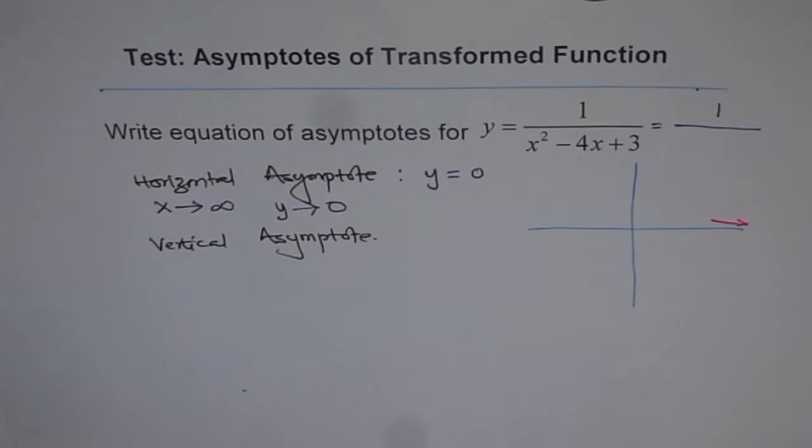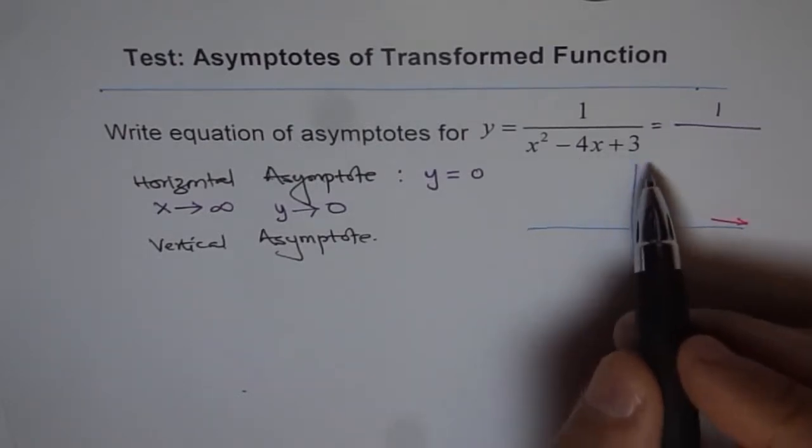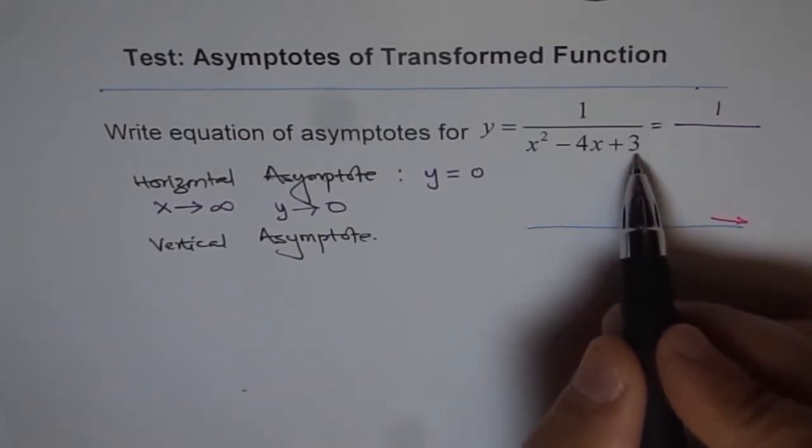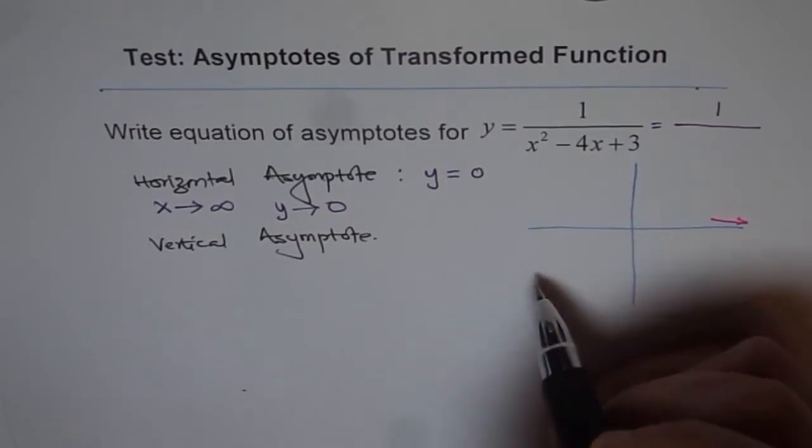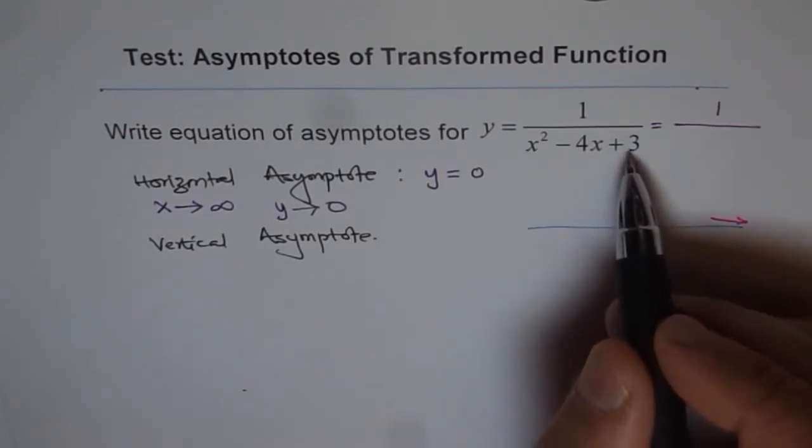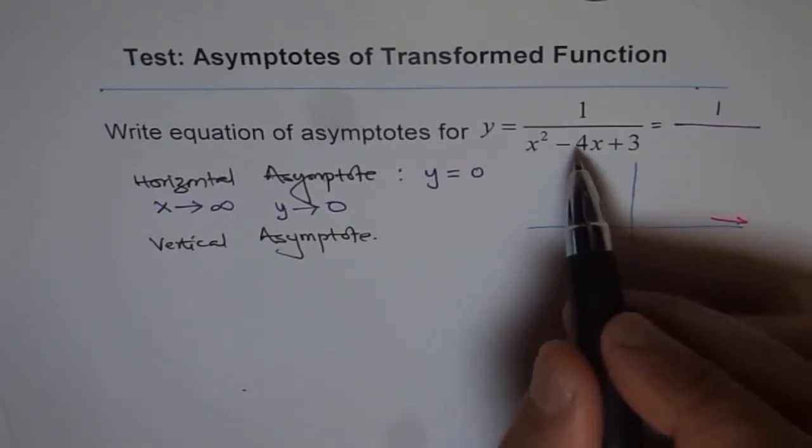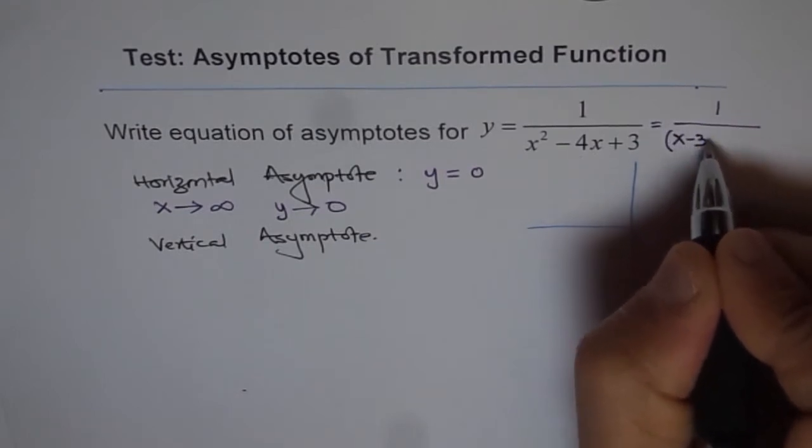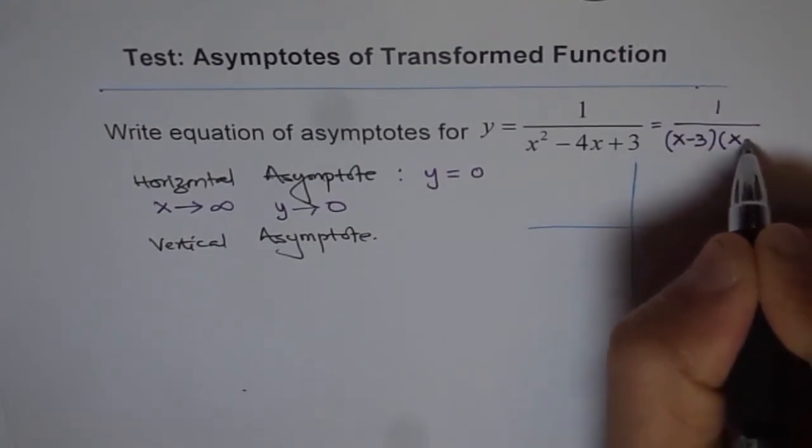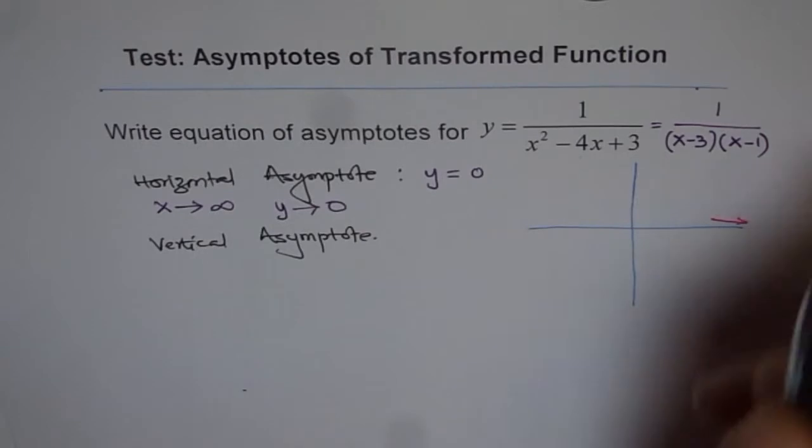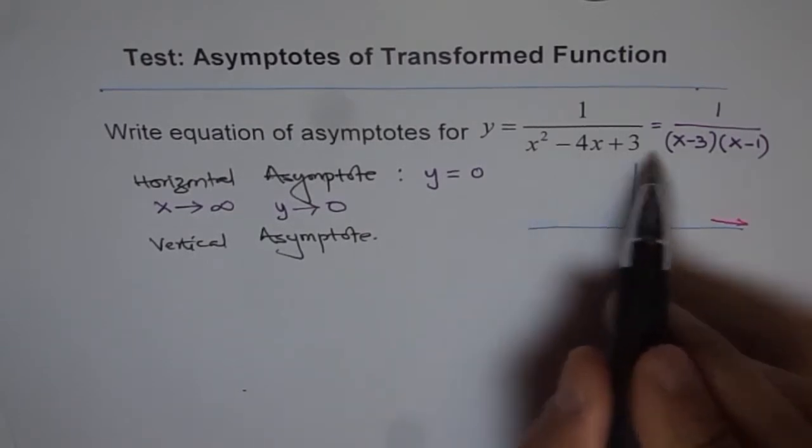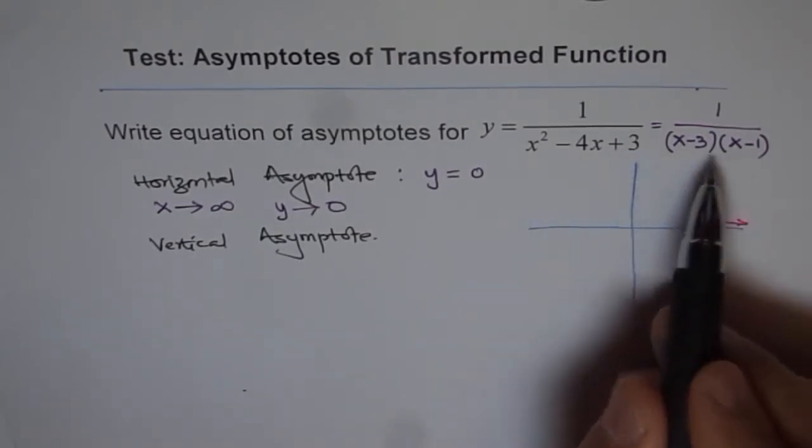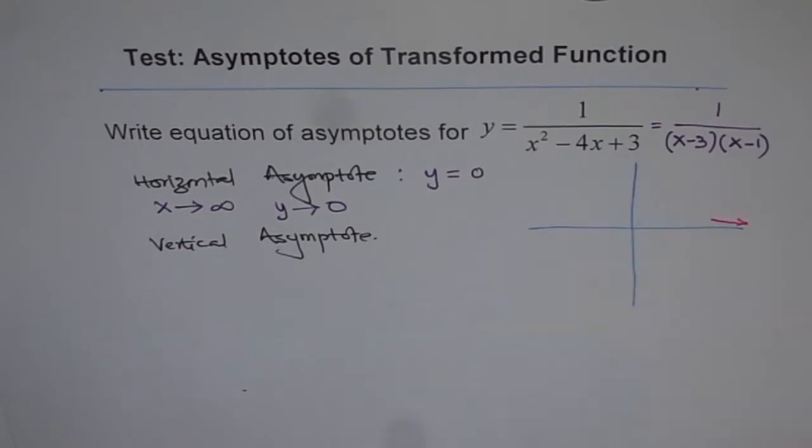The product of 2 numbers should be plus 3, and their sum should be minus 4. The numbers are minus 3 and minus 1. When you multiply them, you get 3, and the sum is minus 4. So we can write this as (x minus 3) times (x minus 1). That's the factored form.